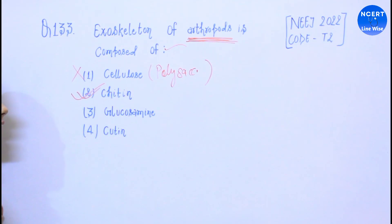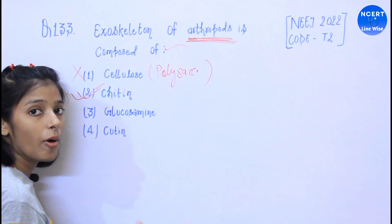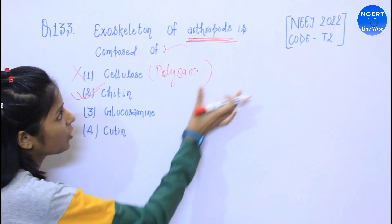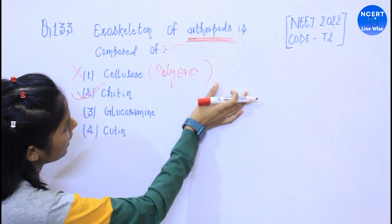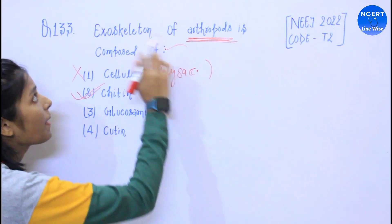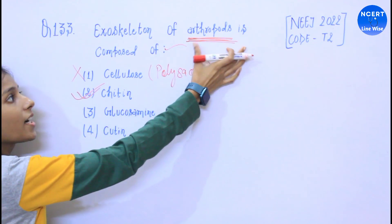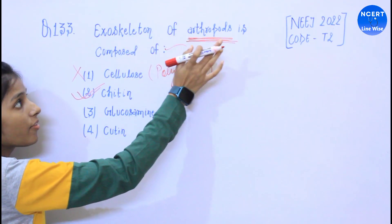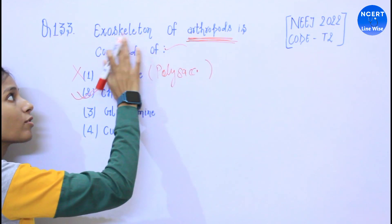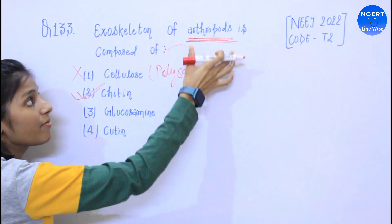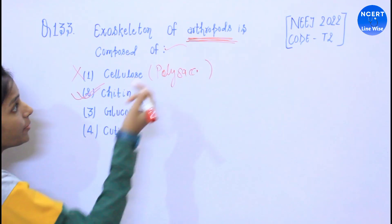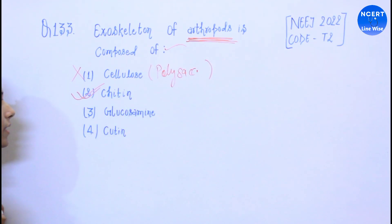Cellulose, chitin is a distinguishable feature of the chitin. I have shown you that it is highlighted. Who is the question of the chitin? Exoskeleton of arthropods. Specifically arthropods. You have to put chitin because it is chitin.